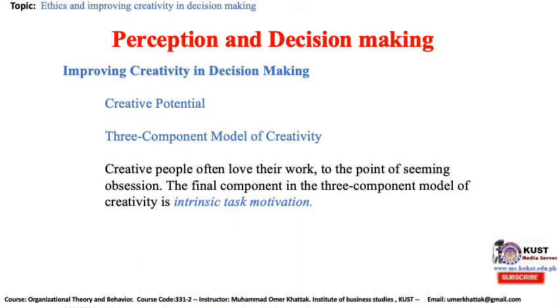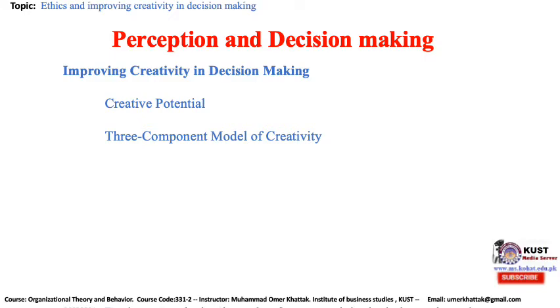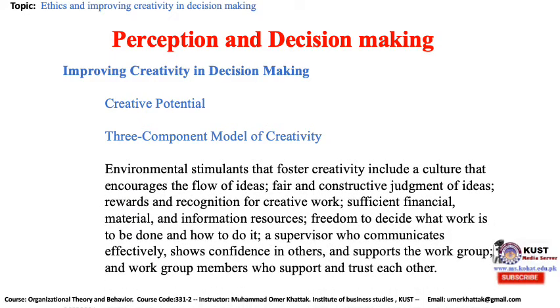Creative people often love their work to the point of seeming obsession. The final component in the three component model of creativity is intrinsic task motivation — the desire to work on something because it's interesting, involving, exciting, satisfying, or personally challenging. It's what turns creative potential into actual creative ideas. Environmental stimulants that foster creativity include a culture that encourages the flow of ideas, fair and constructive judgment of ideas, rewards and recognition for creative work, sufficient financial, material and information resources, freedom to decide what work is to be done and how to do it, and a supervisor who communicates effectively and supports the work group.